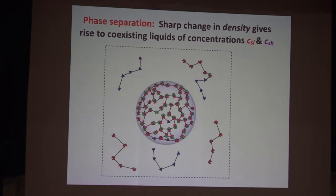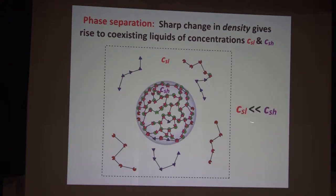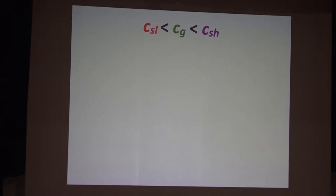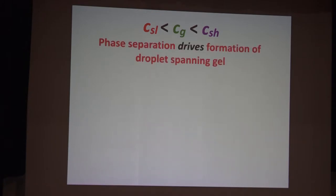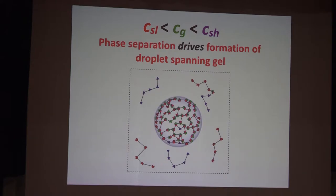Phase separation is a change in density whereby the molecules huddle into a droplet, giving rise to two concentrations: one for the dispersed phase — the saturation concentration of the low variety — and a droplet phase with a high saturation concentration, such that the concentration in the dispersed phase is quite a bit lower than the concentration inside the droplet. We still haven't talked about a gel here. In the case where the gel point lives between these two concentration limits, we can essentially end up with phase separation driving the formation of a droplet-spanning gel, because you get gelation for free.